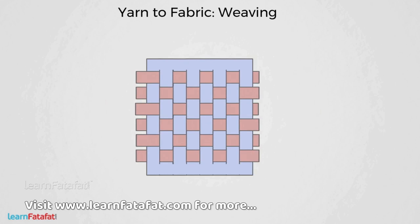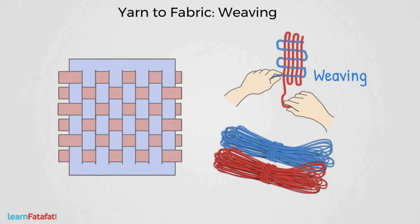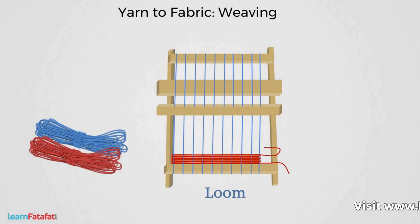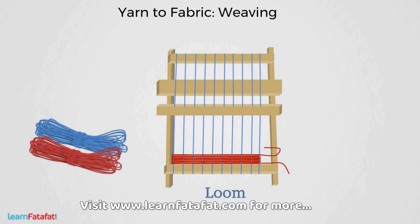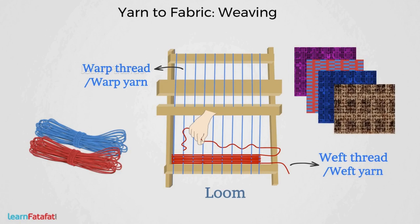You can weave yarn in the same way, but for that we need two sets of yarn. The process of arranging two sets of yarn to make fabric is called weaving. A loom is a structure used to give support to the weave. A tightly held thread strung over the loom vertically is the warp thread or warp yarn. Another thread drawn through and inserted over and under the warp thread is the weft thread or weft yarn. With the weft thread, it is possible to create different patterns and designs in the fabric.